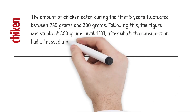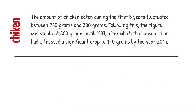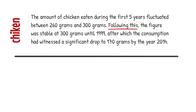We can write about the chicken consumption the following way: the amount of chicken eaten during the first five years fluctuated between 260 grams and 300 grams. Following this, the figure was stable at 300 grams until 1999, after which the consumption had witnessed a significant drop to 170 grams by the year 2014. Pay attention to the linkers we have used to connect ideas: 'following this,' 'after which.'